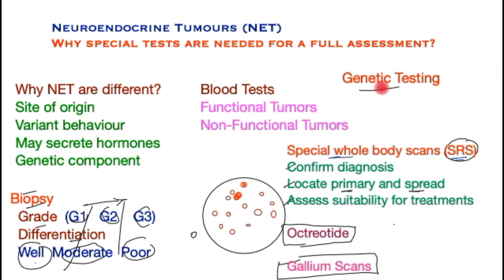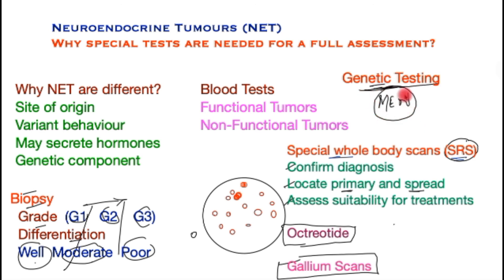Last and by no means least is genetic testing. In certain tumor types, patients are prone to multiple tumors arising in families, forming clusters — a condition called multiple endocrine neoplasia. There are other genetic associations as well, and patients with specific tumors would trigger genetic testing for themselves and their immediate families to look for these genes. This concludes a brief overview of the special tests required in the assessment of neuroendocrine tumors.